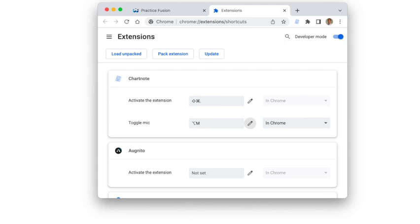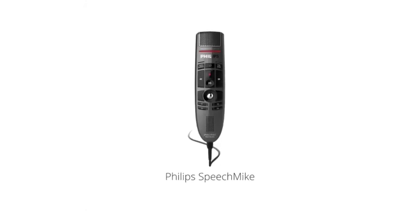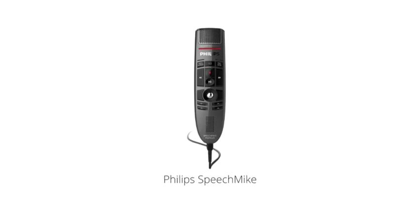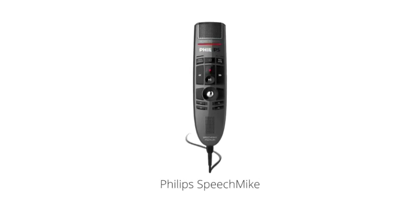You can also change the keyboard shortcut to activate the Charnode extension and search for a snippet or template. A handheld dictation microphone like the Philips SpeechMic can also be configured to work with Charnode. For more information, look at the link in the comment section.